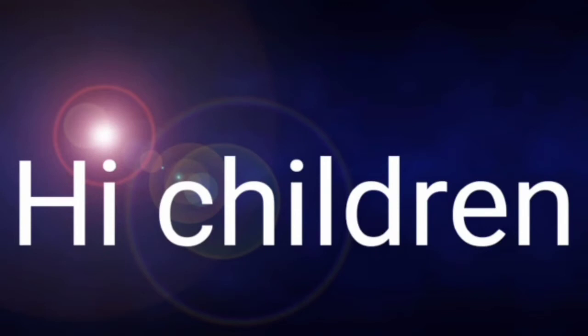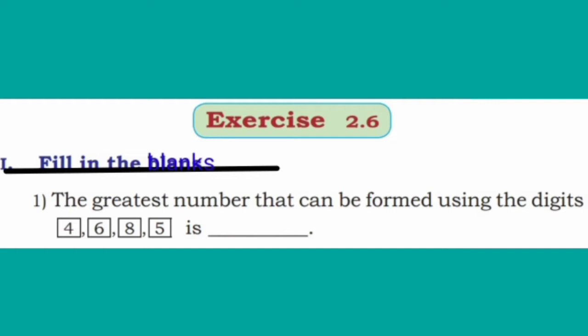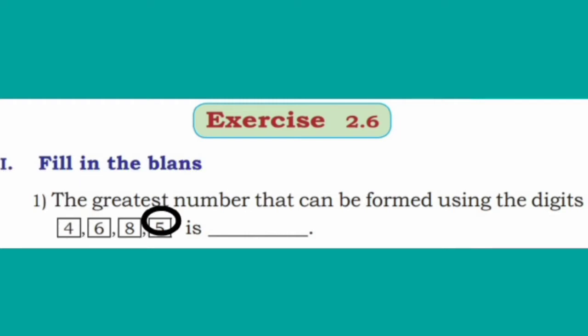Hi children, in the previous class you have learnt about framing 3-digit numbers. Now we are going to solve exercise 2.6. First, fill in the blanks. The greatest number that can be formed using the digits 4, 6, 8, 5 is blank.